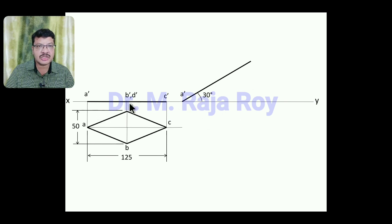Then A' to B' distance, you measure with compass and mark that here. That is B' and D', A' to C' distance, you measure with compass and mark from this A', then you will get C' here.